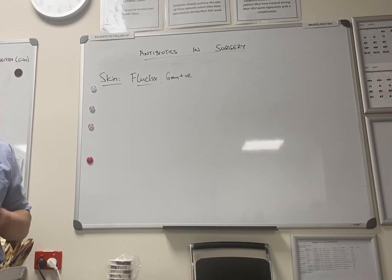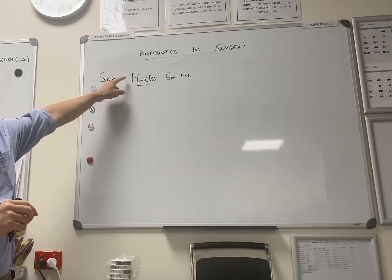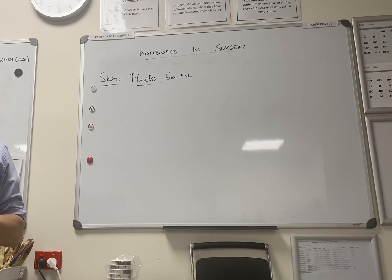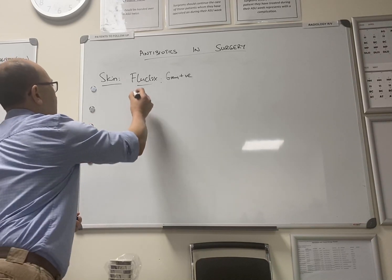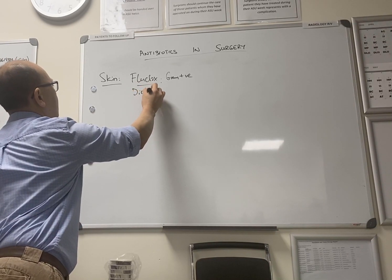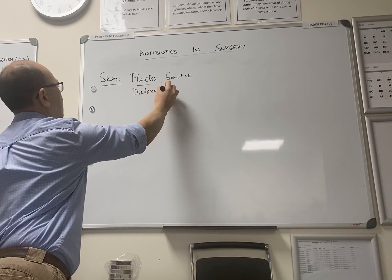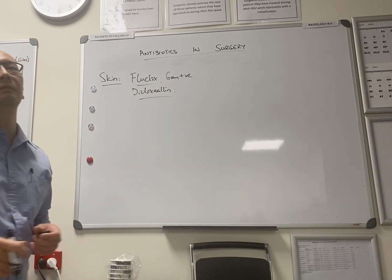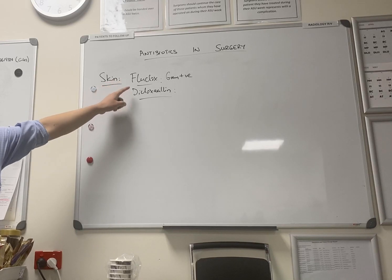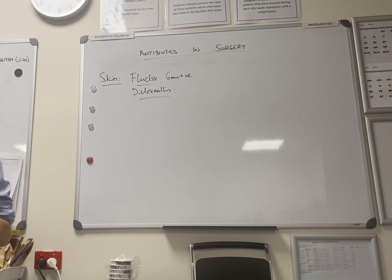What else can you use if they're allergic to Fluclox or penicillins? Actually before we go to that, what's an alternative to Fluclox that's also a penicillin? Dicloxacillin? Does it really matter? I don't know. One's supposed to cause hepatitis and one's supposed to cause renal fibrosis. Choose your poison.